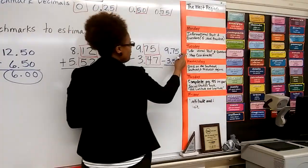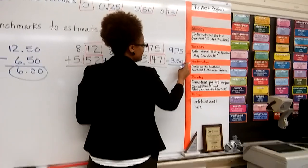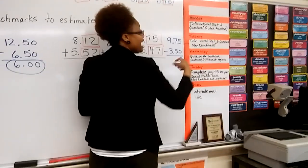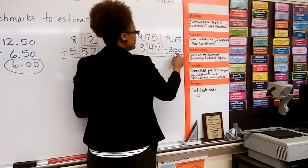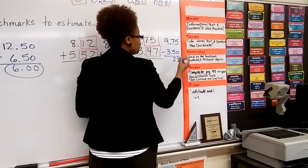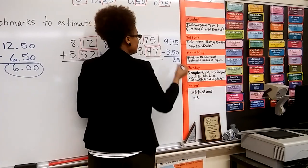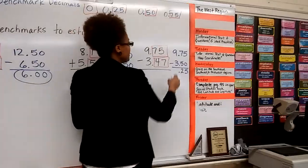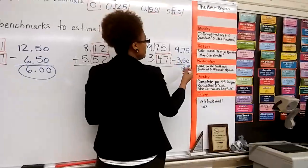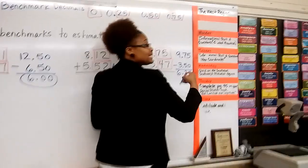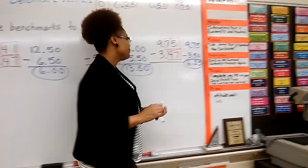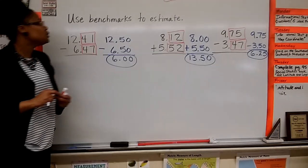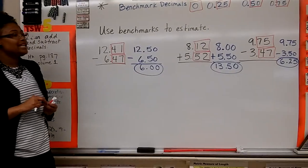So we got minus 3 and 50 hundredths. We're subtracting, so 5 hundredths minus 0 hundredths is 5 hundredths. And 7 tenths minus 5 tenths is 2 tenths. And 9 ones minus 3 ones is 6 ones. Always say your place value. All right, so that is how we use benchmarks to estimate.